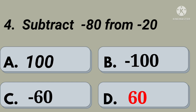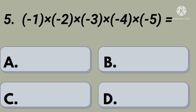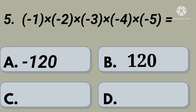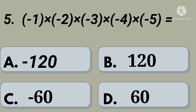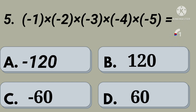Fifth question: minus 1 into minus 2 into minus 3 into minus 4 into minus 5 equals. Option A: minus 120, option B: 120, option C: minus 60, option D: 60. Your time starts now. Right, option A: minus 120.